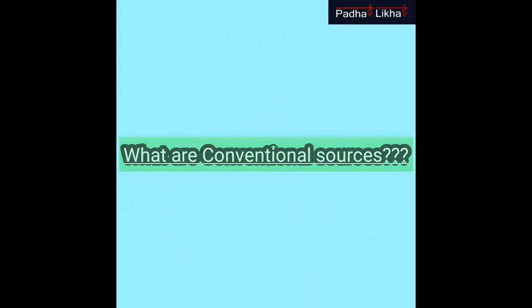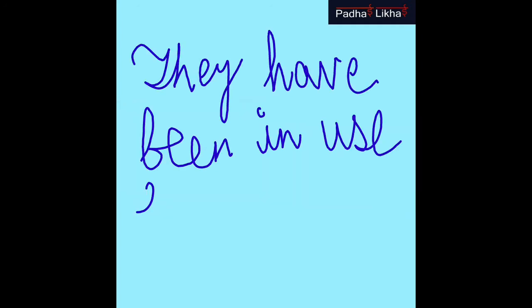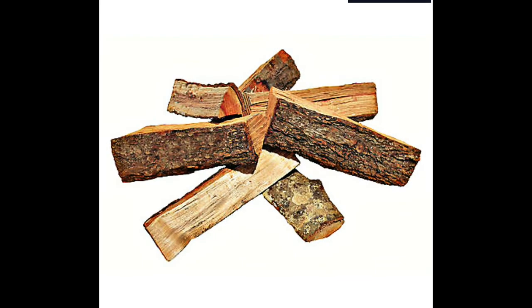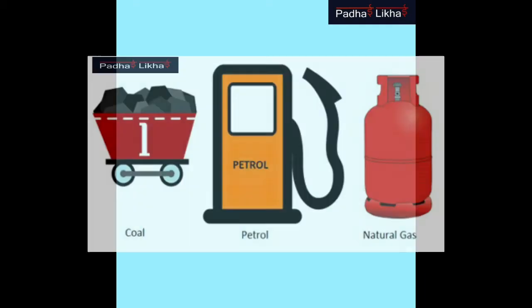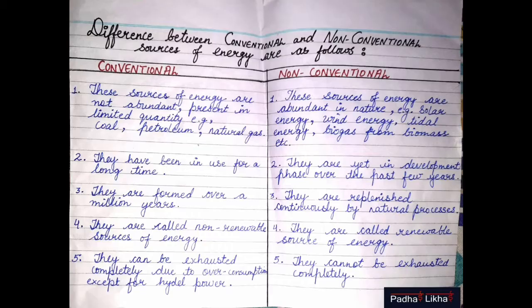Conventional sources of energy are those which have been in common use for a long time. For example, firewood and fossil fuels such as coal, petroleum and natural gas are all conventional sources.